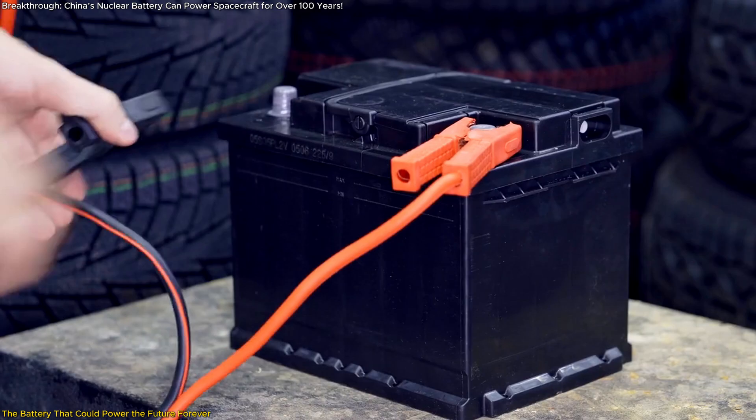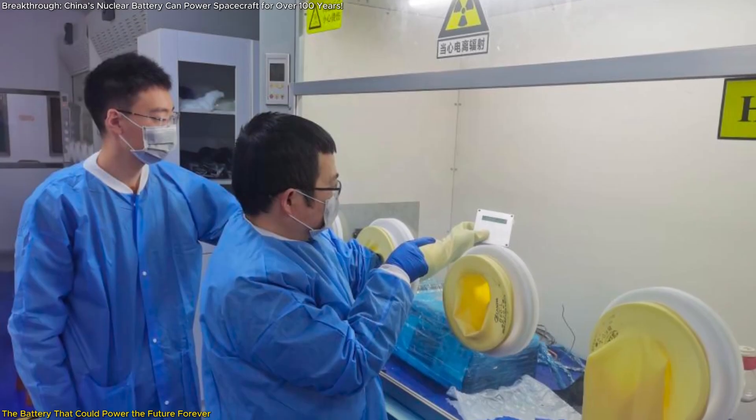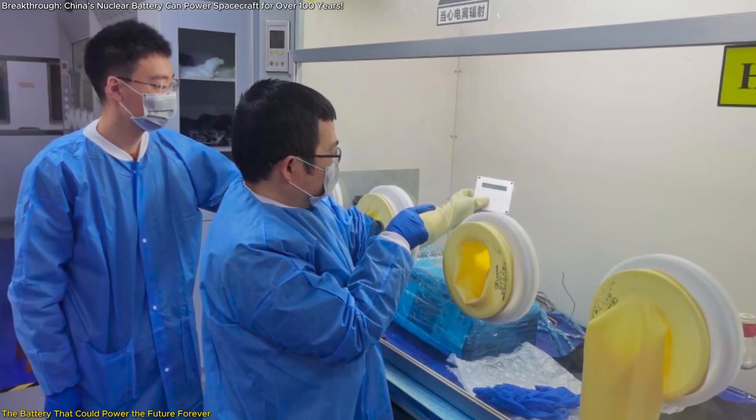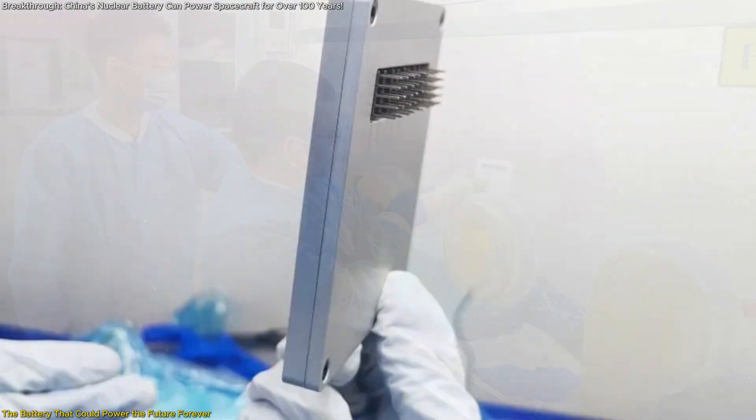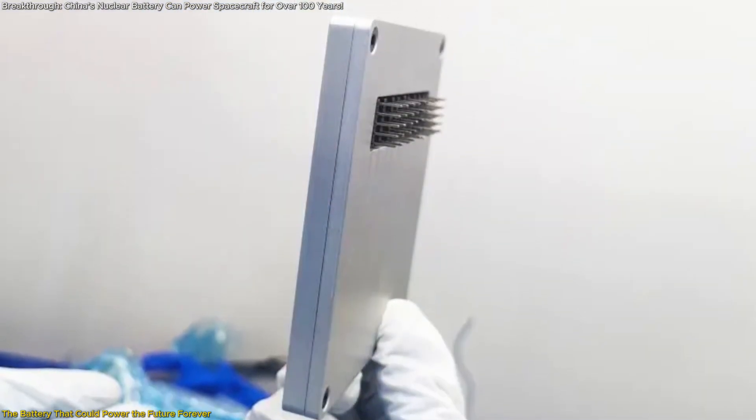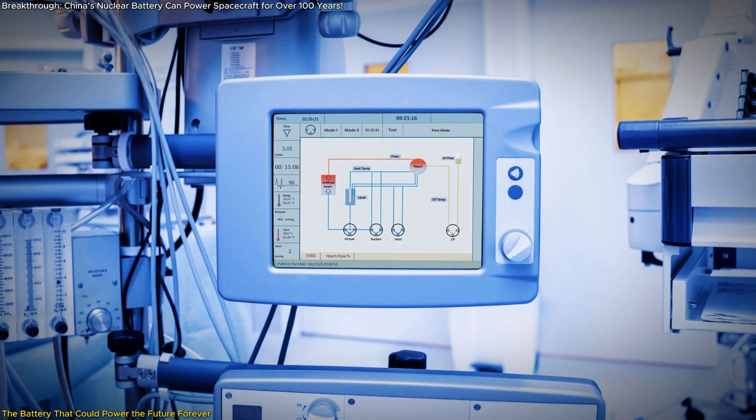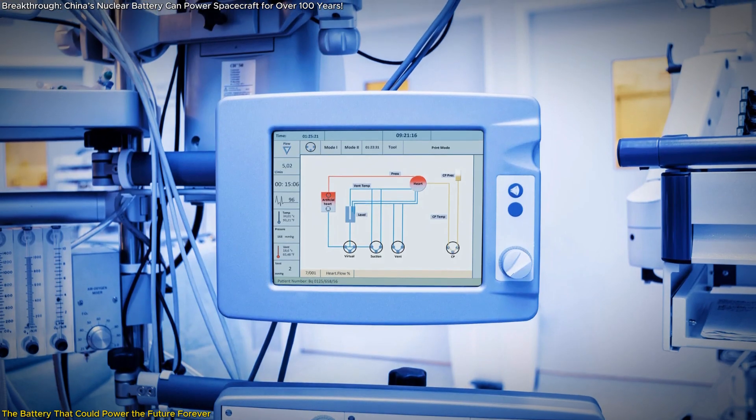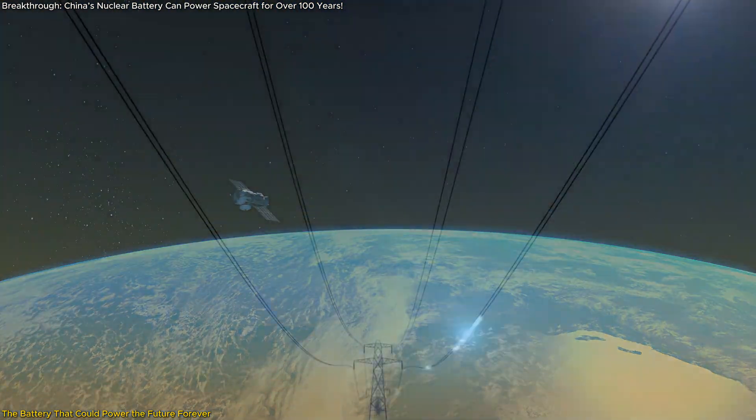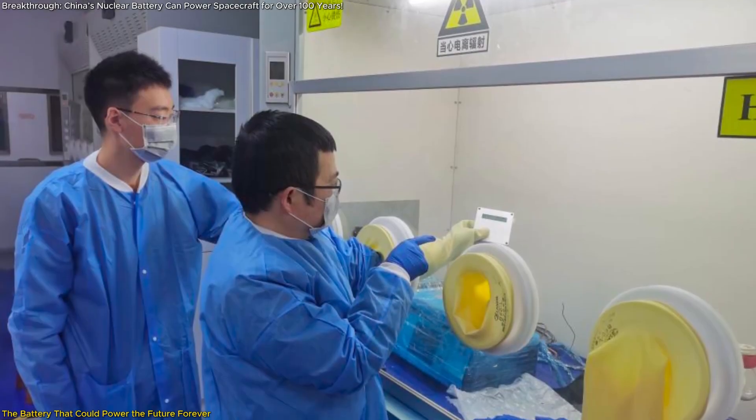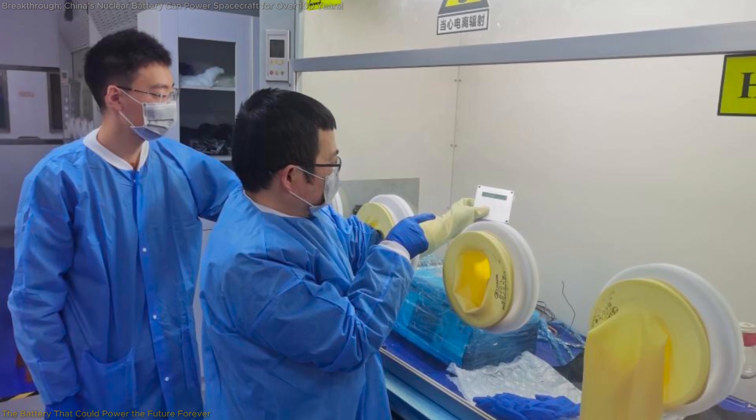Unlike traditional batteries that degrade, Zhulong-1 uses radioactive decay to provide a steady electricity flow, making it one of the most durable energy solutions ever. This innovation could revolutionize medical devices, space exploration, and power storage. But how does it work and what challenges remain? Let's explore.